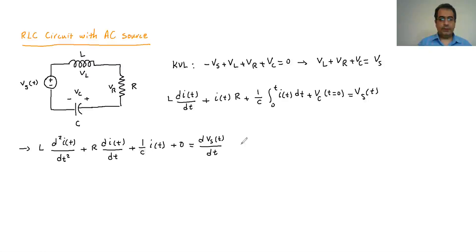And then if I gonna divide everything with the L, so what I'm gonna get is gonna be the second derivative of the I respect to the t, plus R divided by L dI(t) over dt, plus 1 over LC I(t) is equal to 1 over L dVS(t) divided by dt.